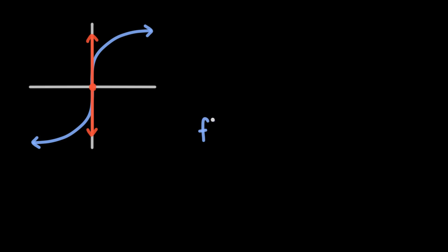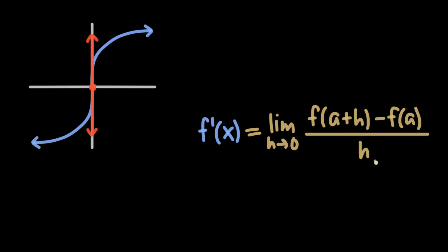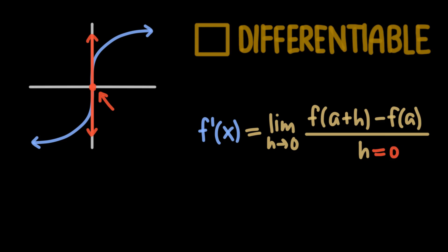In order to understand why a vertical tangent line means that the slope is not defined, recall the limit definition of the derivative, which says that the derivative of a function is the limit, as h goes to 0, of f(a + h) minus f(a) divided by h. At a point on the graph with a vertical tangent, there is literally no change on the x-axis, so h, which represents horizontal change in the slope, would be equal to 0, which would make the denominator equal to 0. This causes the fraction to be undefined, so the curve is not differentiable.